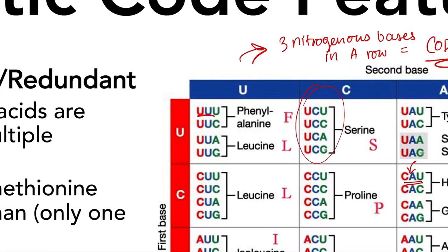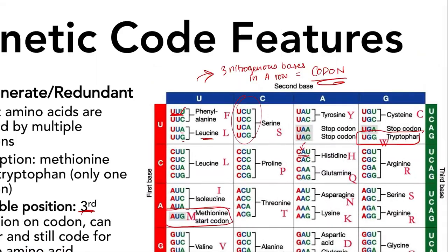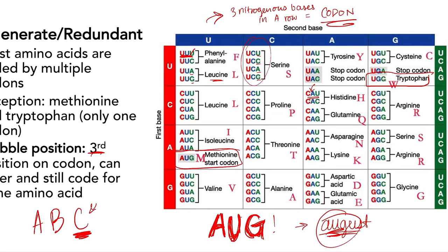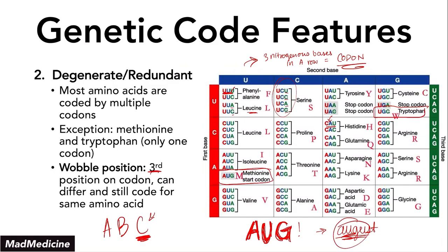The main difference between the majority of codons is that the third position is the one that is really changing. The first two positions do not change, because if you change the first two positions, you cannot reach the final intended amino acid. The wobble position is a high yield concept — something you need to remember and will be tested on in biochemistry.